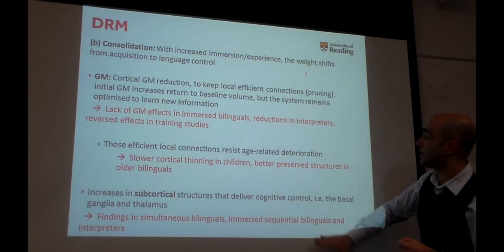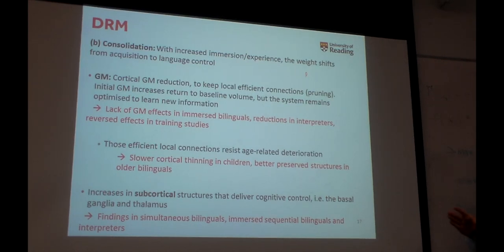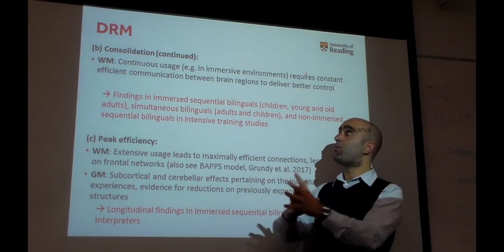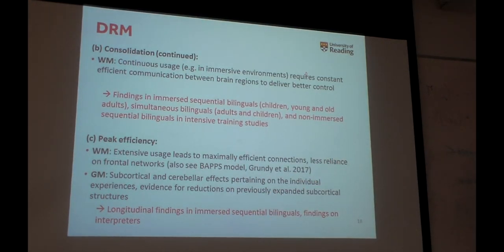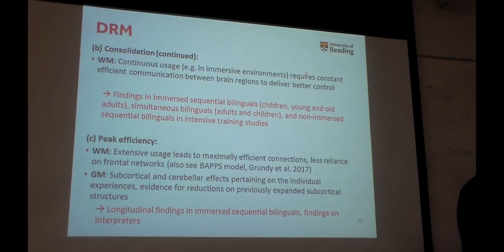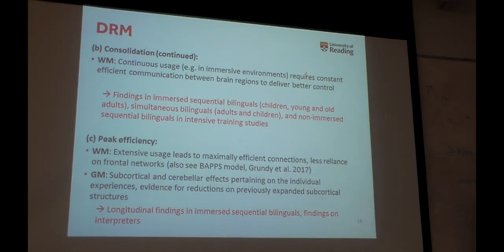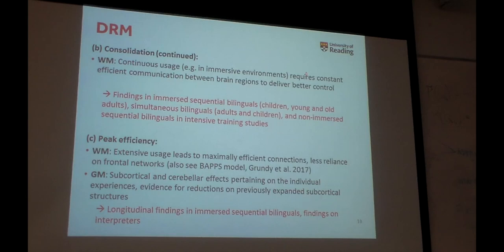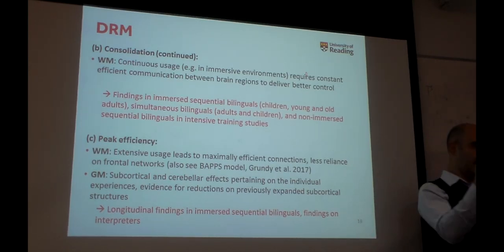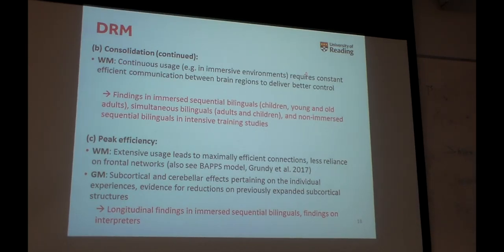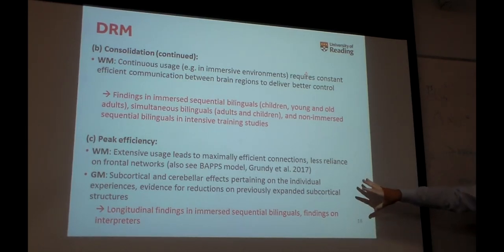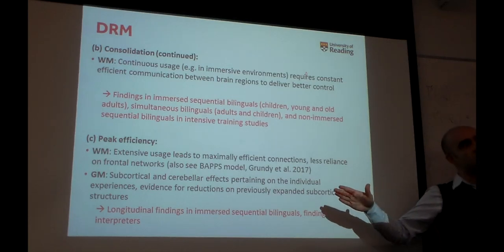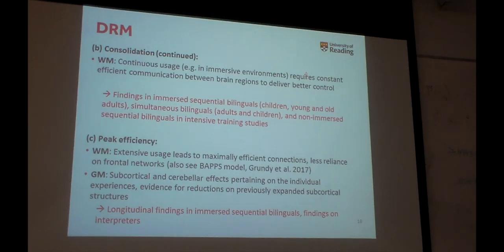The same group shows increases in subcortical structures that deliver cognitive control — the basal ganglia and the thalamus. These are the people that show effects in the white matter: continuous usage requires constant communication between brain regions to deliver better control. The third stage in the model is less well specified, simply because not many people have looked at very experienced bilinguals. Extensive usage yields maximally efficient connections and then less reliance on frontal networks — so you have the reductions I found in my longitudinal study in the frontal cortex. When it comes to white matter, subcortical and cerebellar effects depend on individual experiences, and different types of experience will show different patterns of subcortical restructuring.